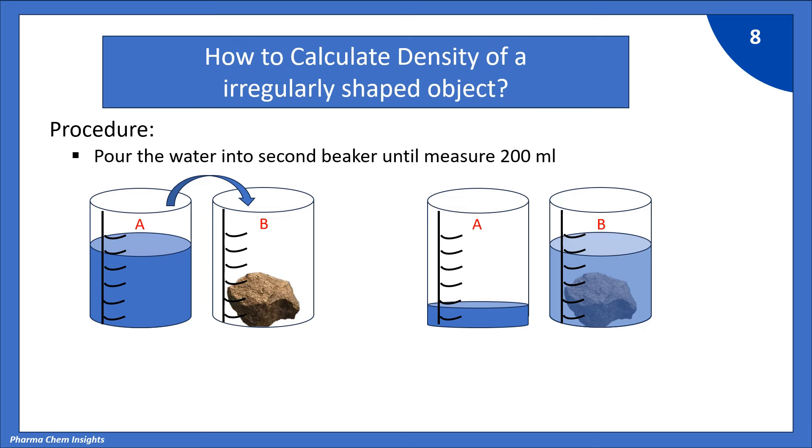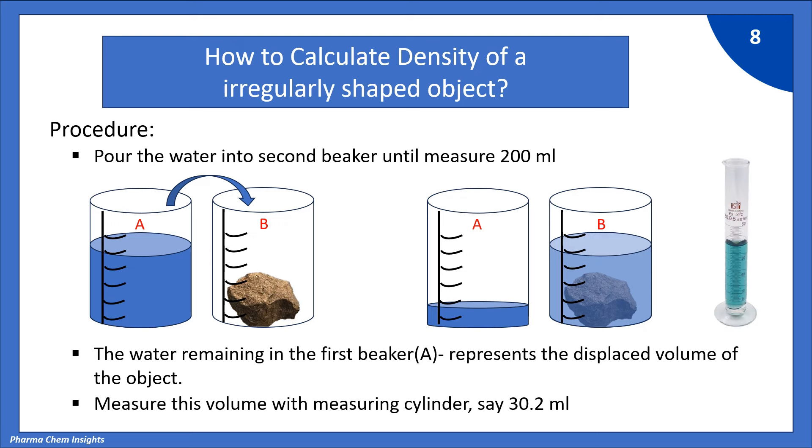The water remaining in the first beaker A represents the displaced volume of the object. Measure this volume with measuring cylinder. Say it is 30.2 ml.